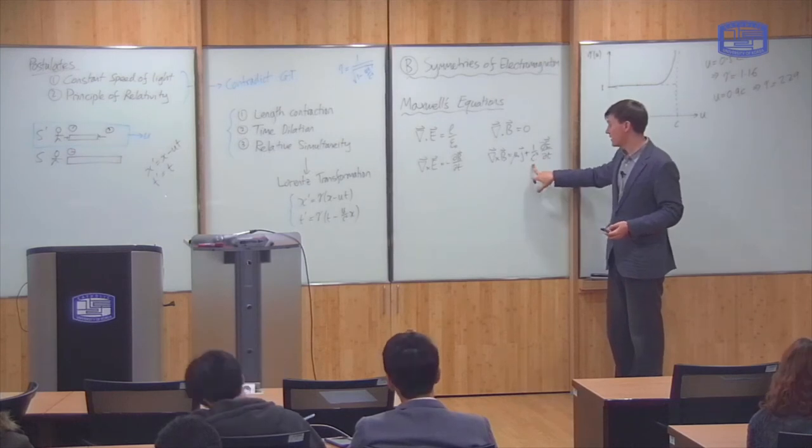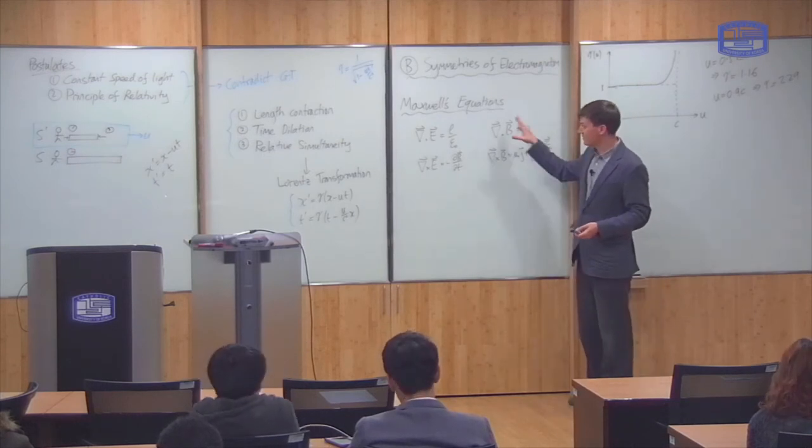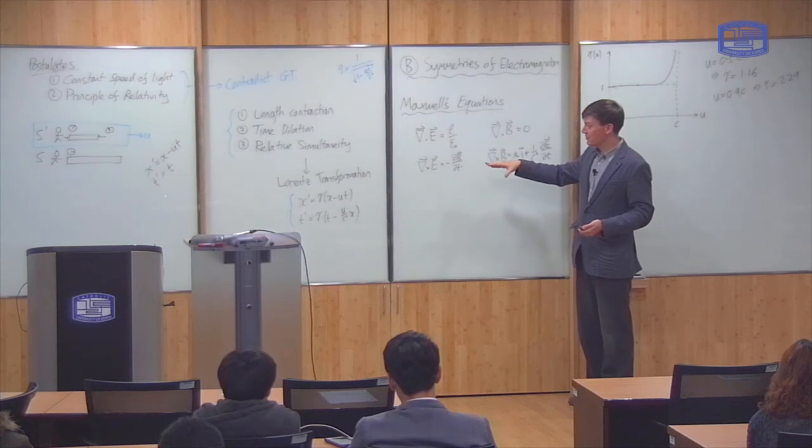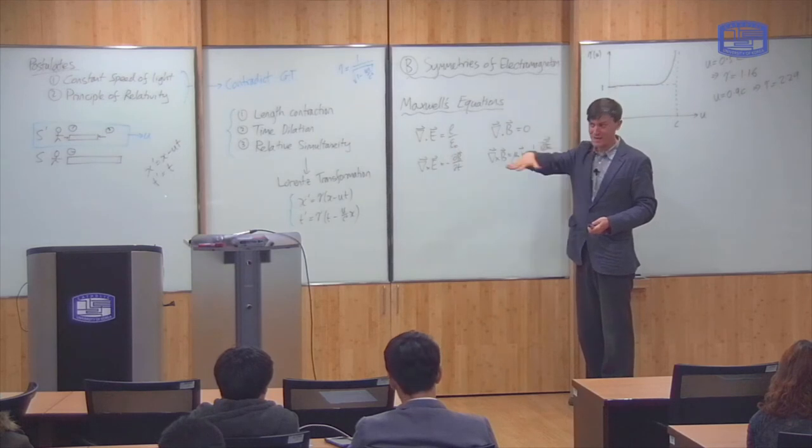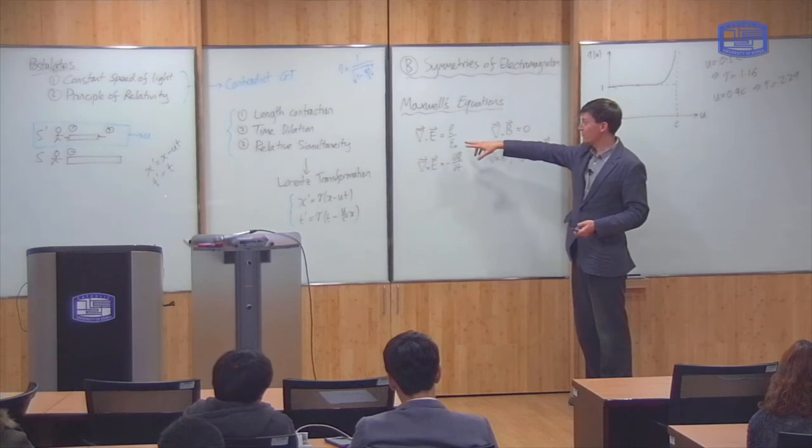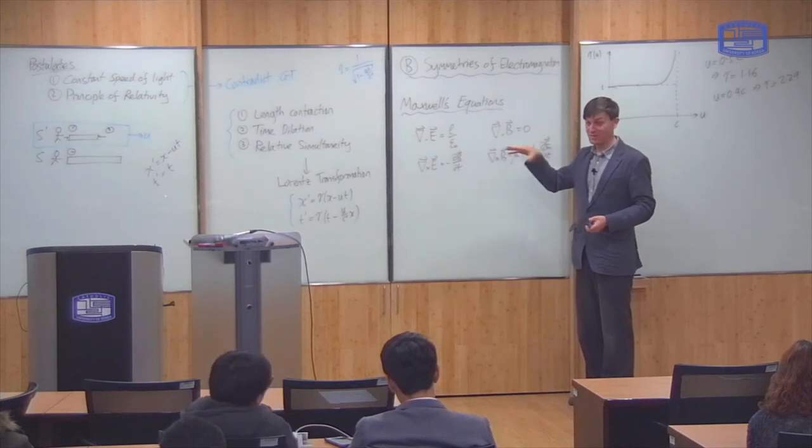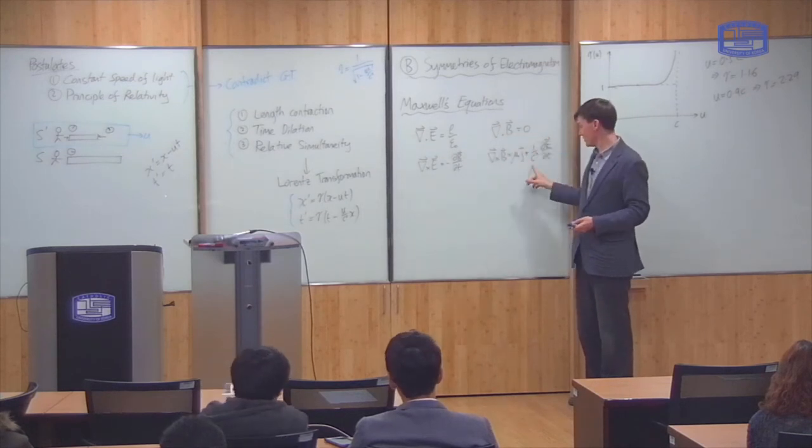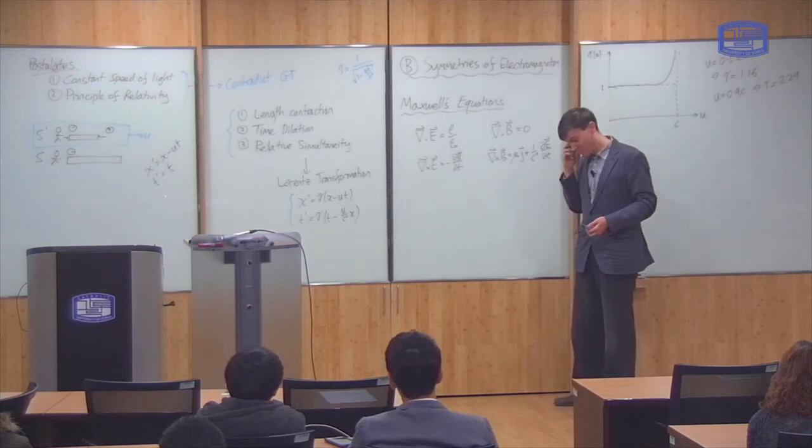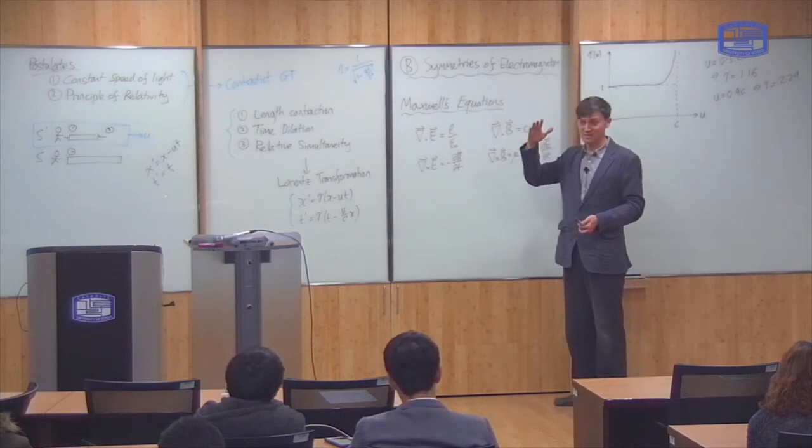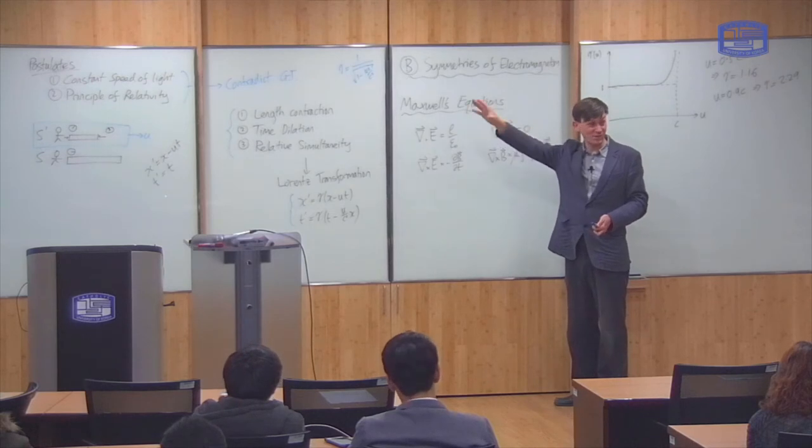This is very significant because you can show that these equations imply that there are solutions of these equations which are wave-like. So there are wave-like solutions of the electric and magnetic fields, and these waves propagate with the speed of light, C. So this was the evidence that led Maxwell to conclude that light is just a wave in the electric and magnetic fields.